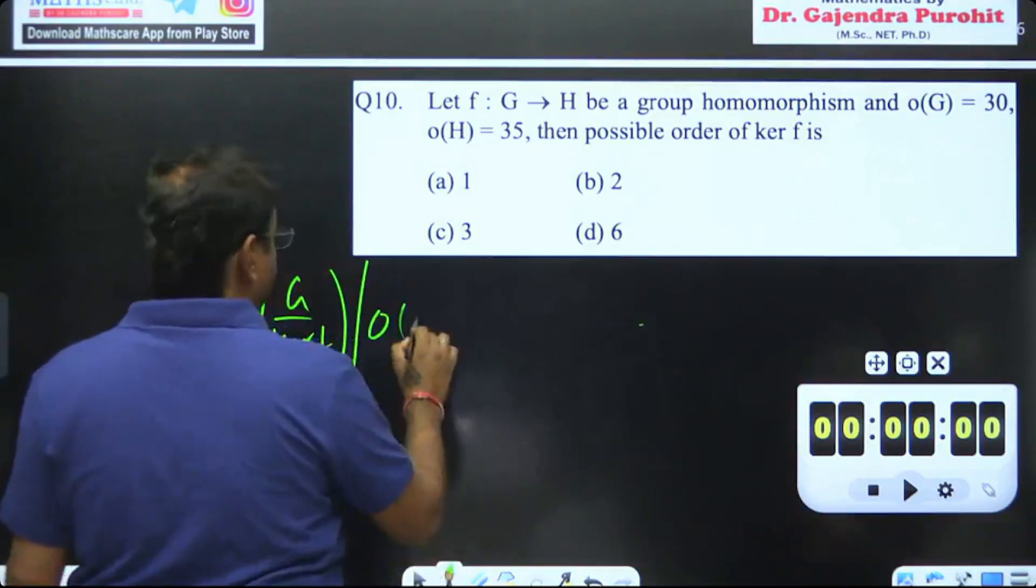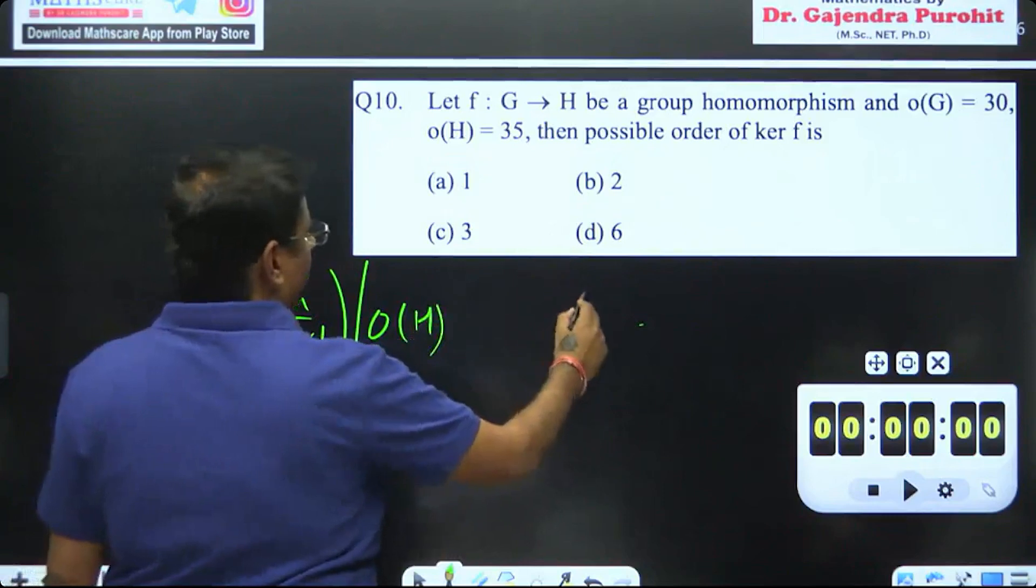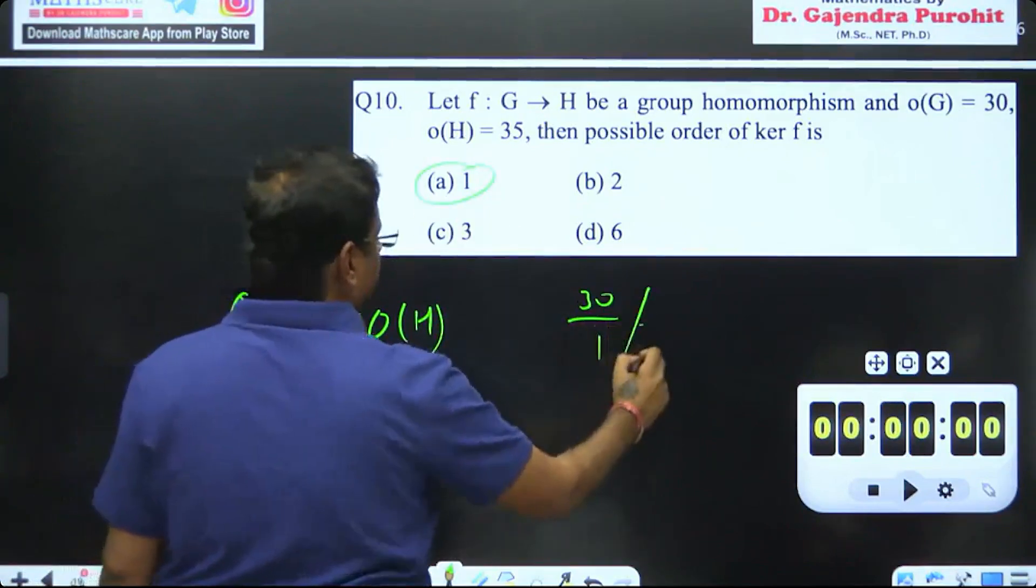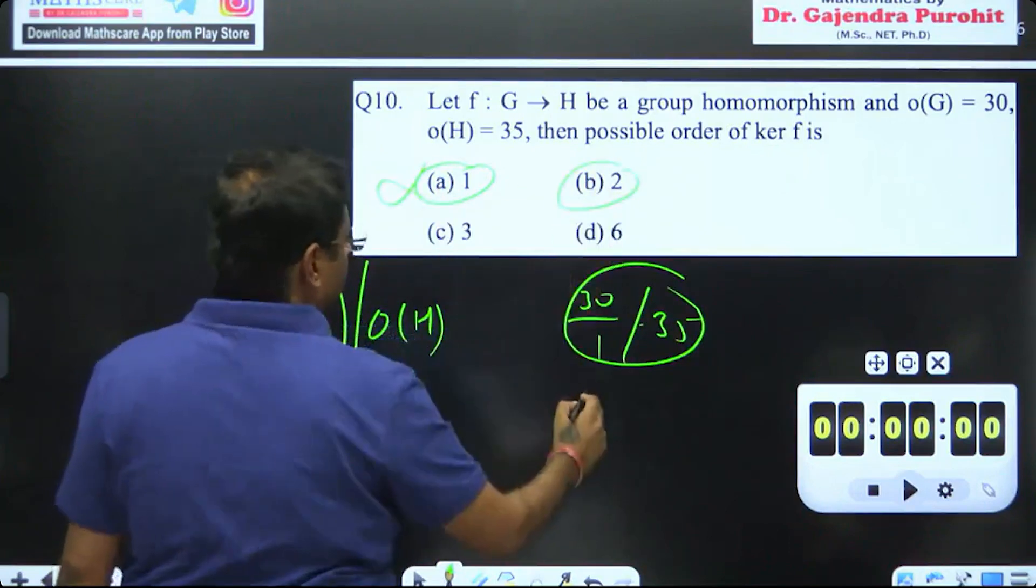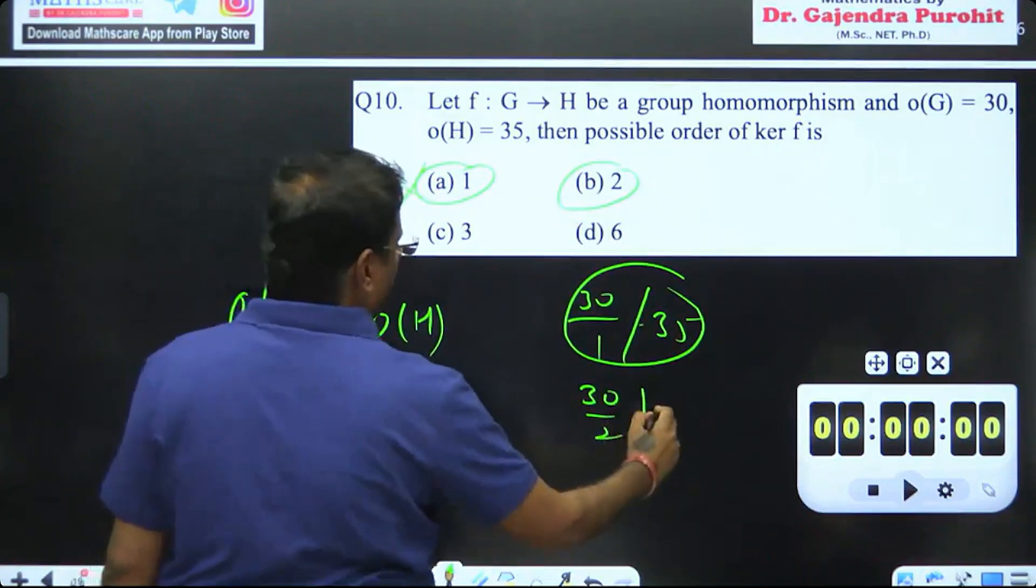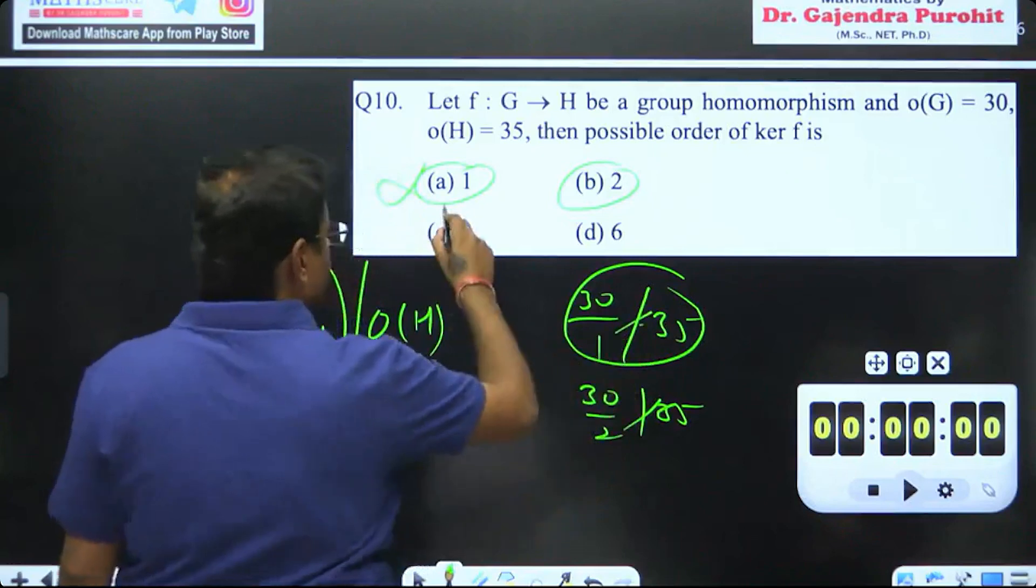If you look at 30 divided by 1, then we cannot divide. So if we compare 30 divided by 2, it is 15 and it is not possible.